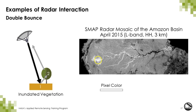This final example shows double bounce, delineated by the yellow circle — it is an inundated forest where trees are standing in water, producing very high backscatter. The signal bounces off the water underneath the vegetation, which is a specular reflector, then bounces off the tree trunk and back to the satellite. Because inundated vegetation is dominated by double bounce, it appears very bright on radar images.